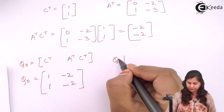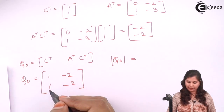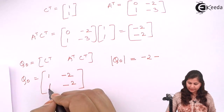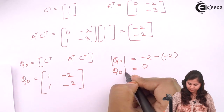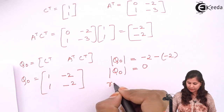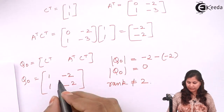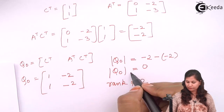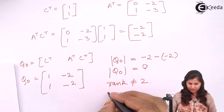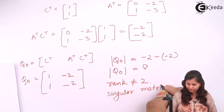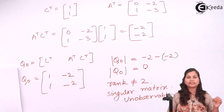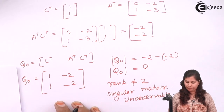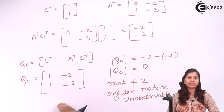We determine the determinant to check the rank: 1×(-2) - (-2)×1 = -2 + 2 = 0. The determinant is 0, so the rank is not equal to 2. This is a singular matrix, and therefore the system is unobservable — one of the states of the system is hidden and cannot be measured or observed externally, as it is not linked with the output.